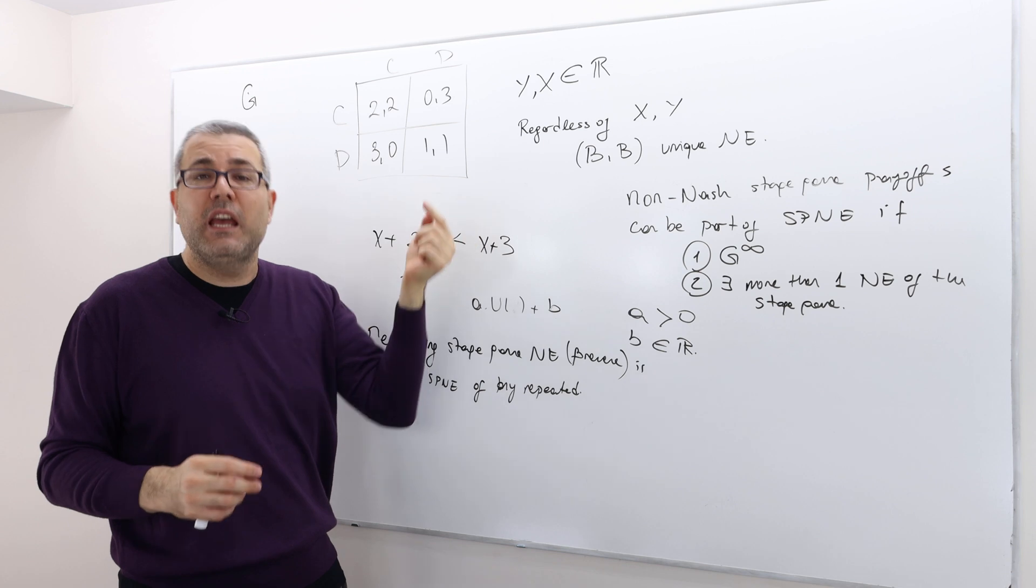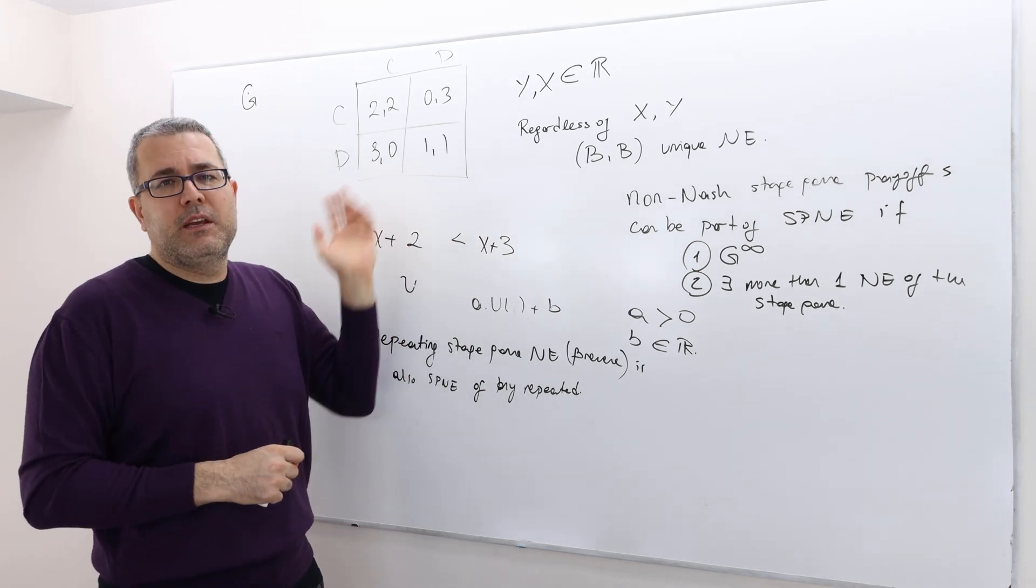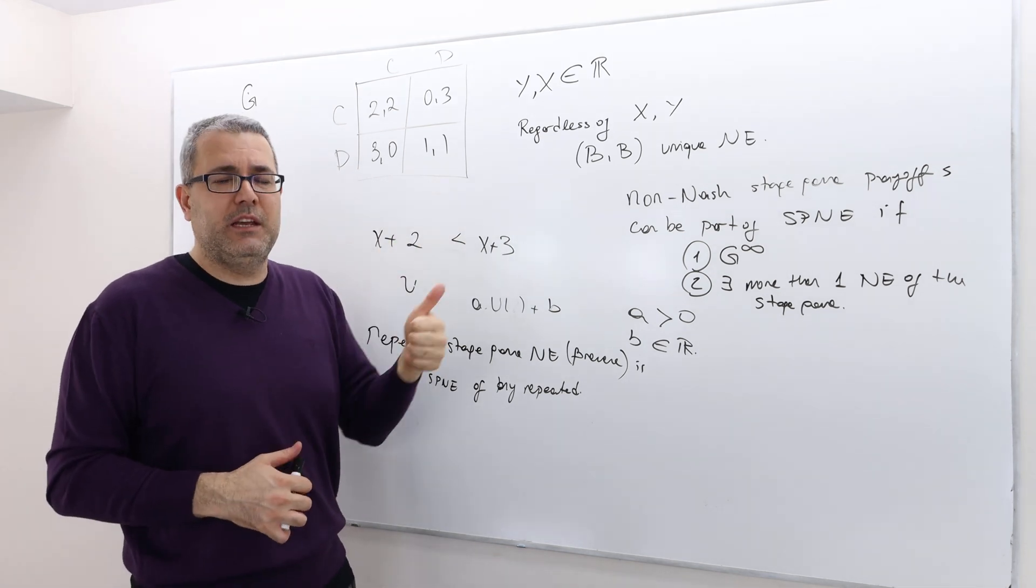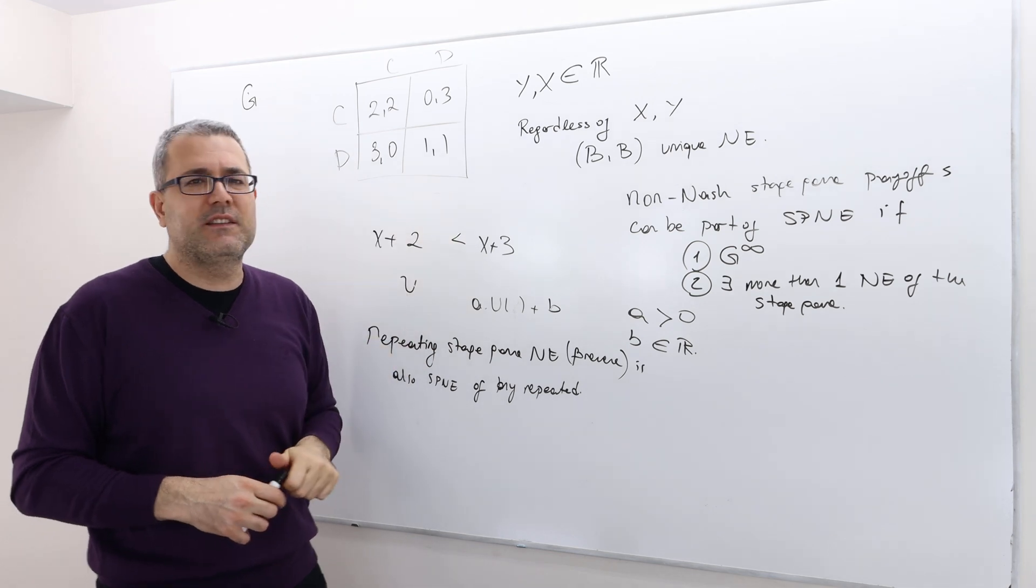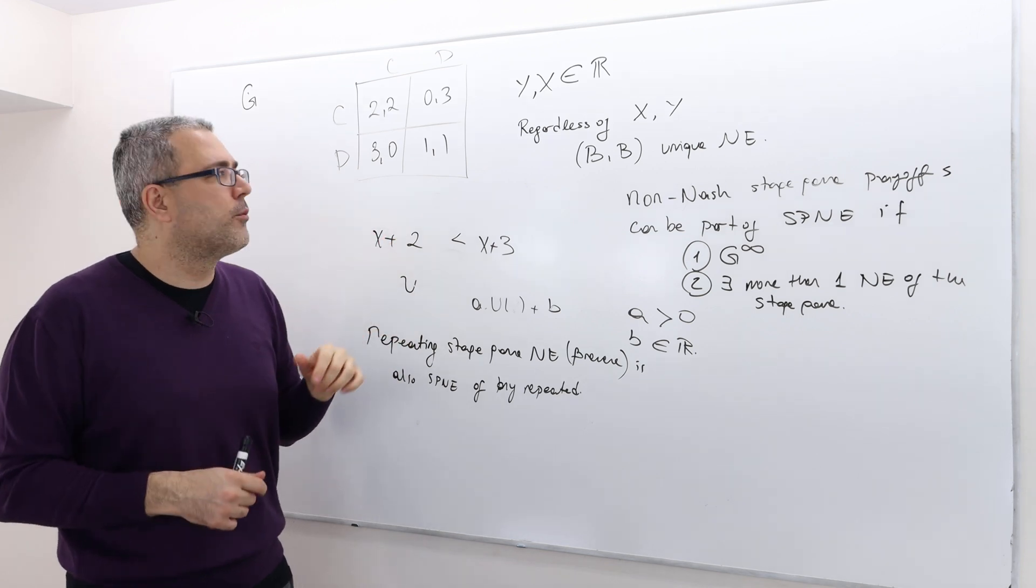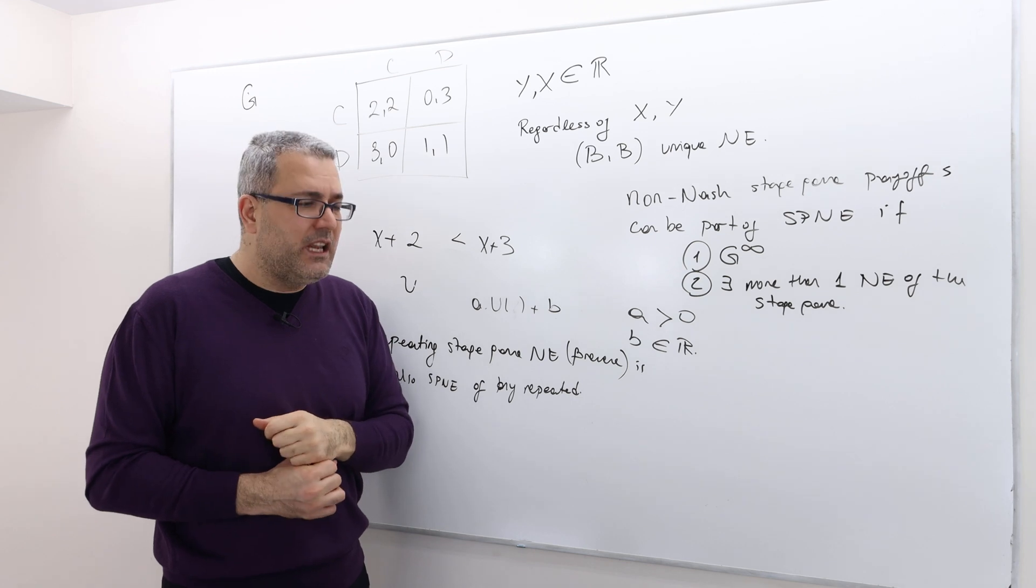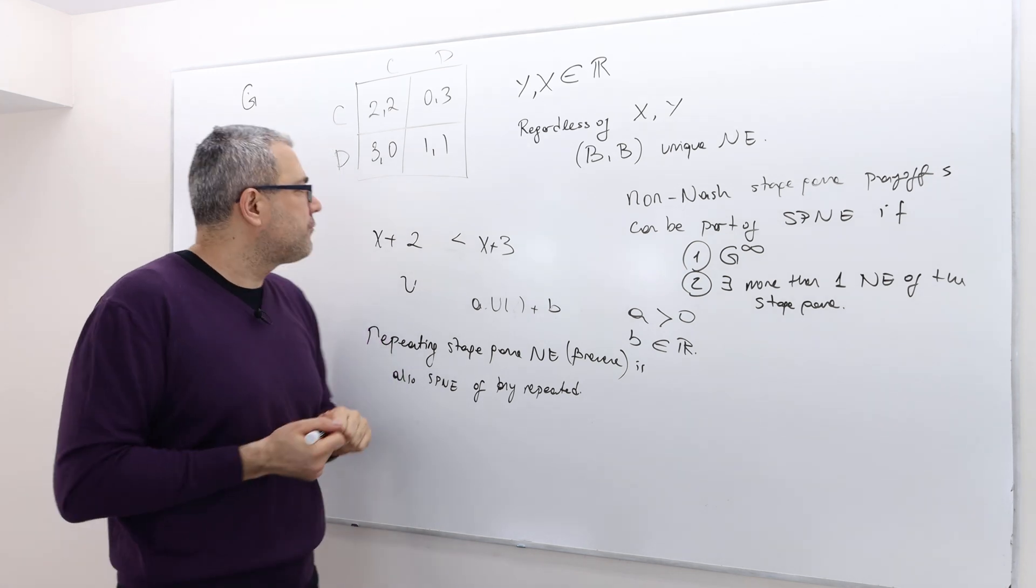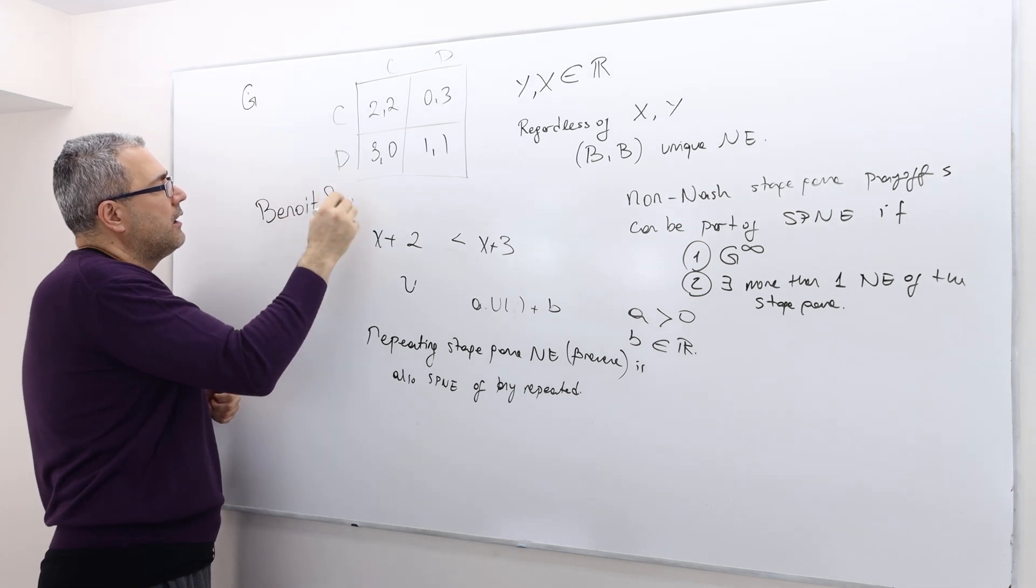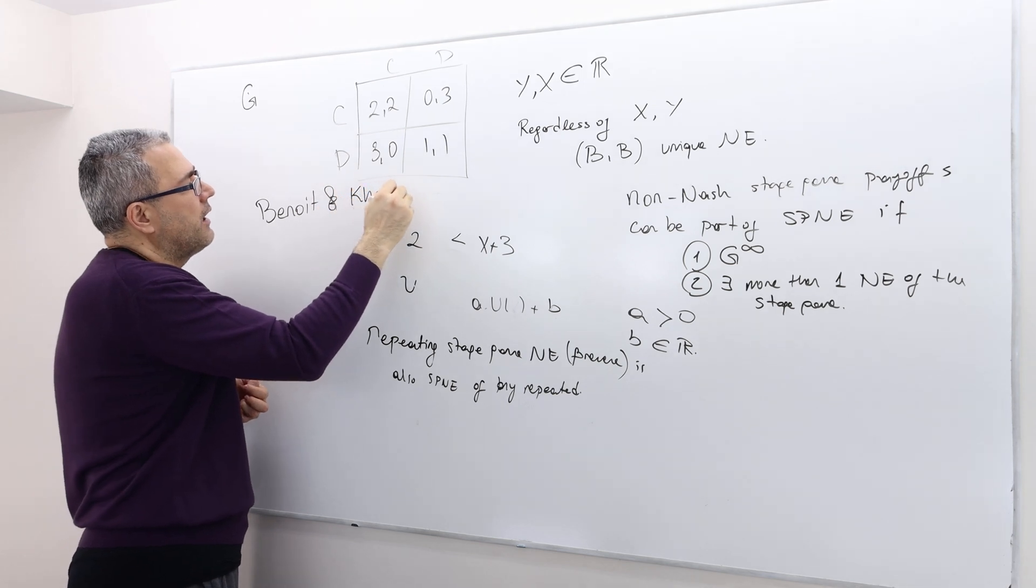Because Prisoner's Dilemma has a unique Nash equilibrium, unfortunately we can't sustain anything other than 1-1 in any form of repeated game of Prisoner's Dilemma. But in many other games we can.